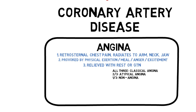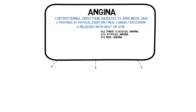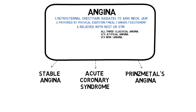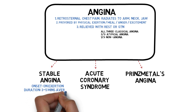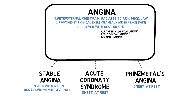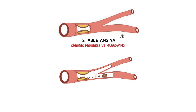Coronary artery disease can be divided into stable angina, acute coronary syndrome, or Prinzmetal angina. Chest pain in stable angina occurs only during physical exertion and lasts around 3 to 5 minutes on average. For both acute coronary syndrome and Prinzmetal angina, the onset of pain occurs at rest. This is because in stable angina there is a stable atherosclerotic plaque causing chronic progressive narrowing, which still allows sufficient blood to the heart. Angina manifests when there is increased oxygen demand, for example during physical exertion.